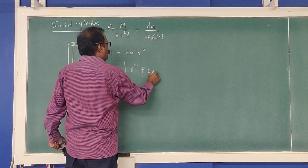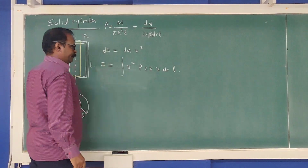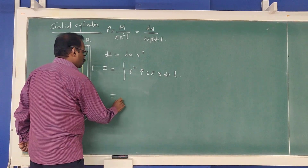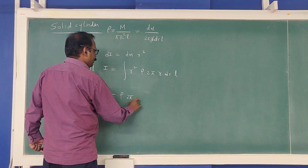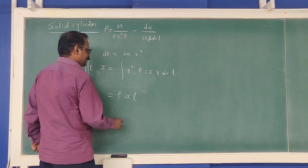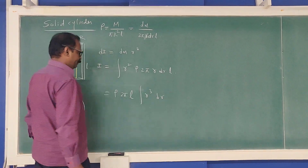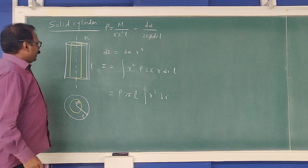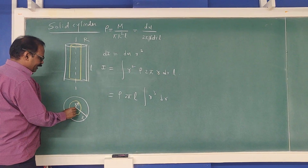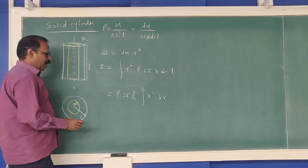Pulling out the constants, I = ρ · 2πL · ∫r³ dr. The limits of integration for r go from 0 to R. Integrating r³ gives r⁴/4. Applying the limits from 0 to R, we get I = ρ · 2πL · R⁴/4.